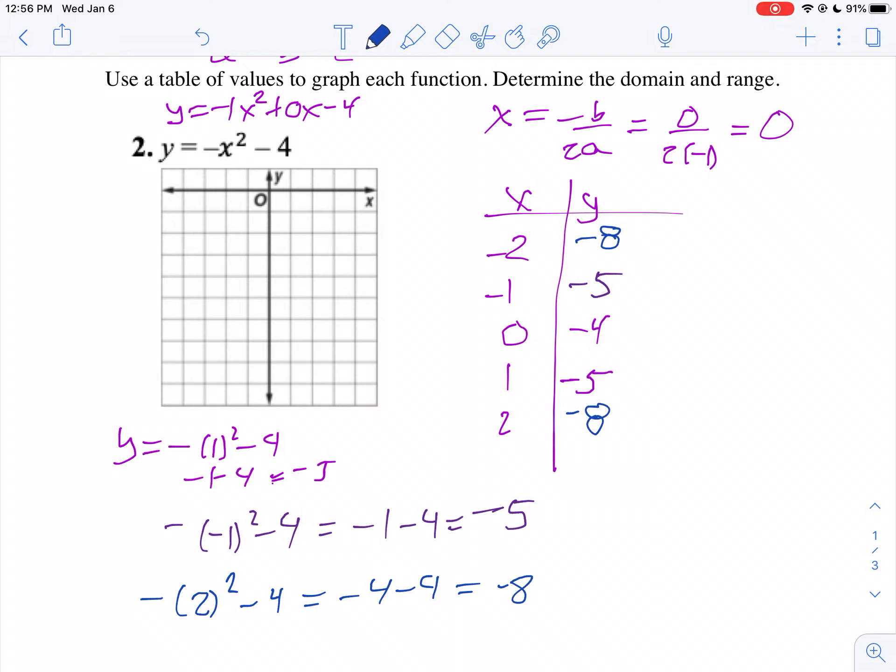So let's plot from the center. 0, negative 4. So I go over 0, I go down 4: 1, 2, 3, 4. Put my point. Over 1 and down 5. Over 2 and down 8.